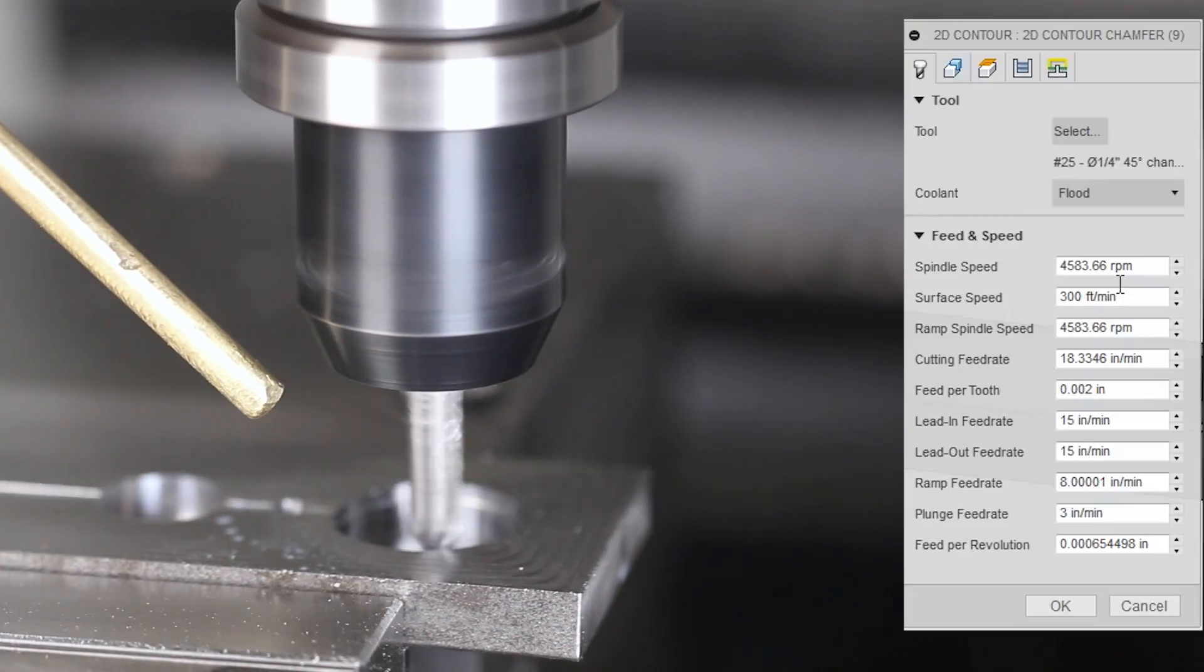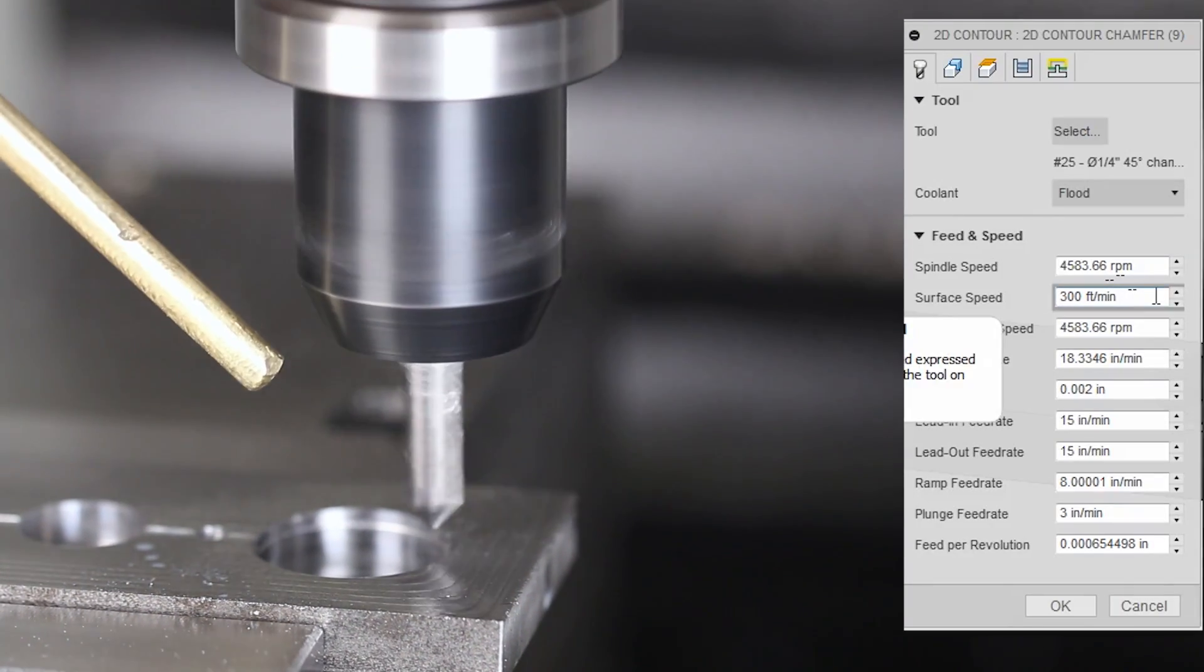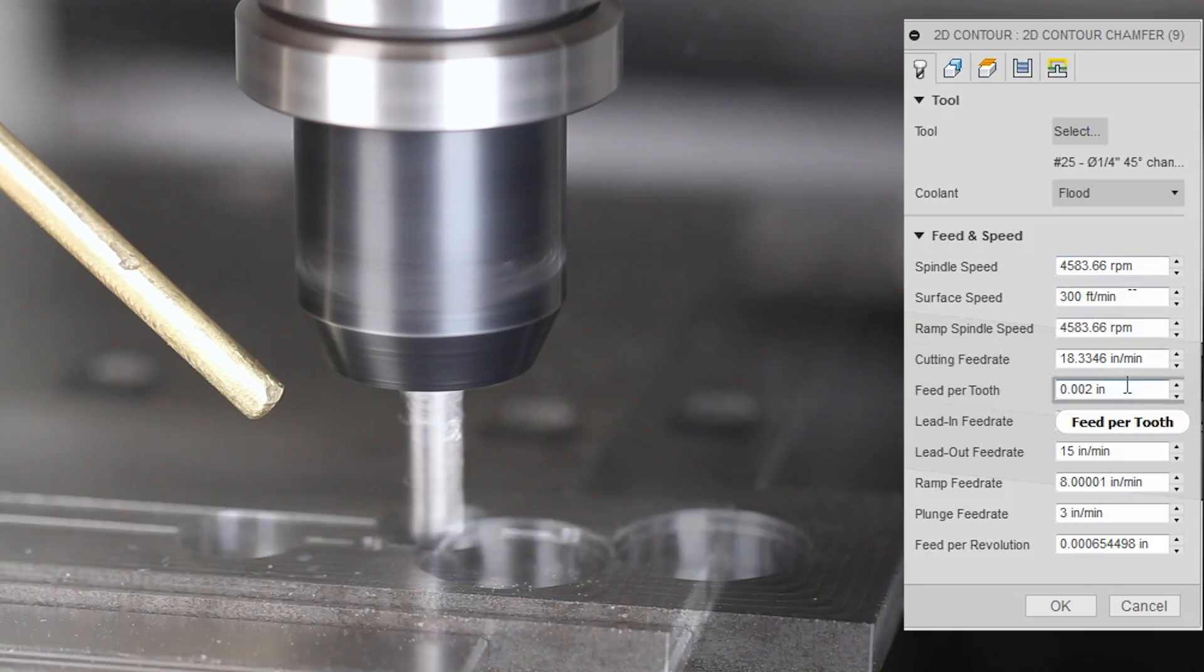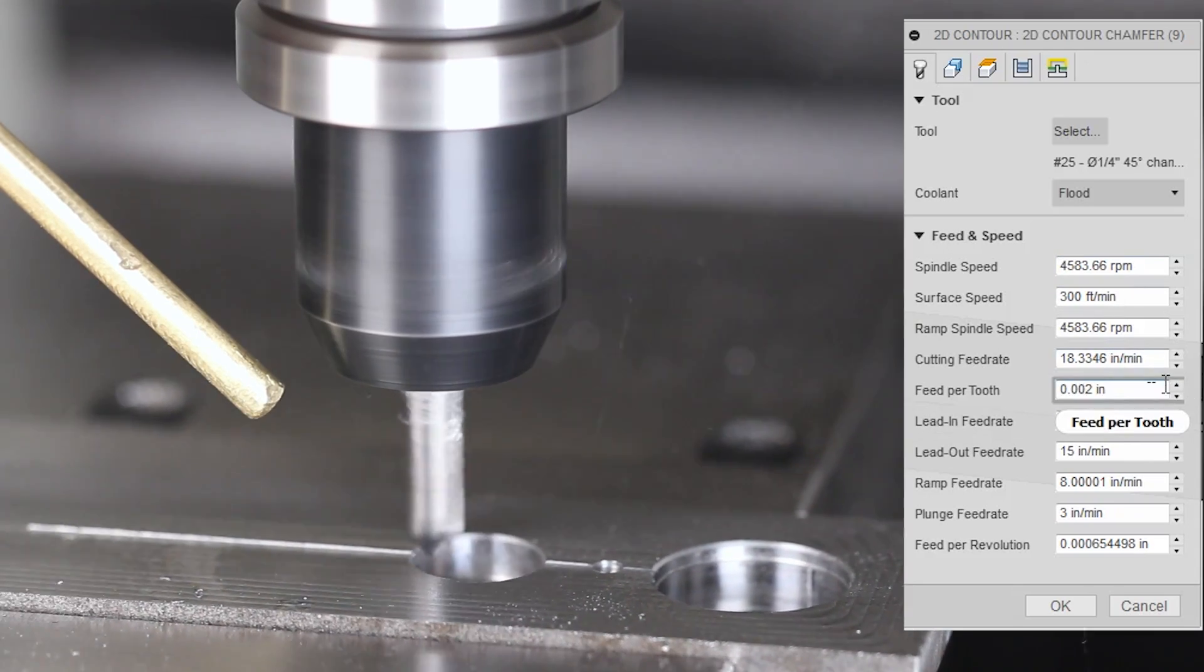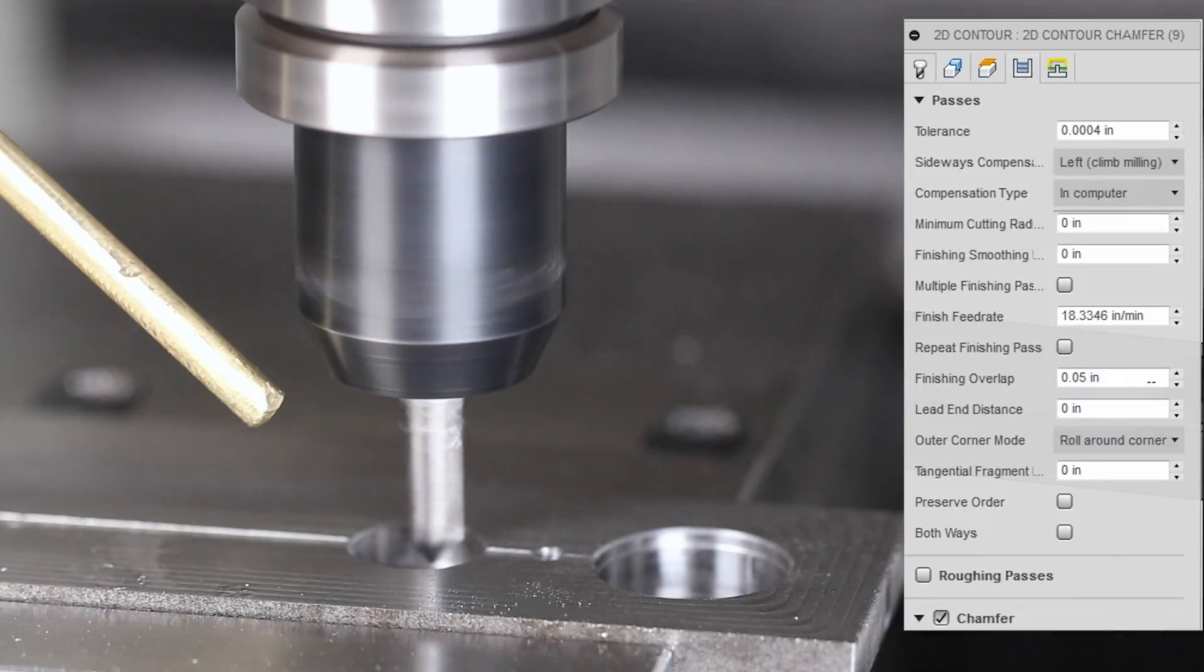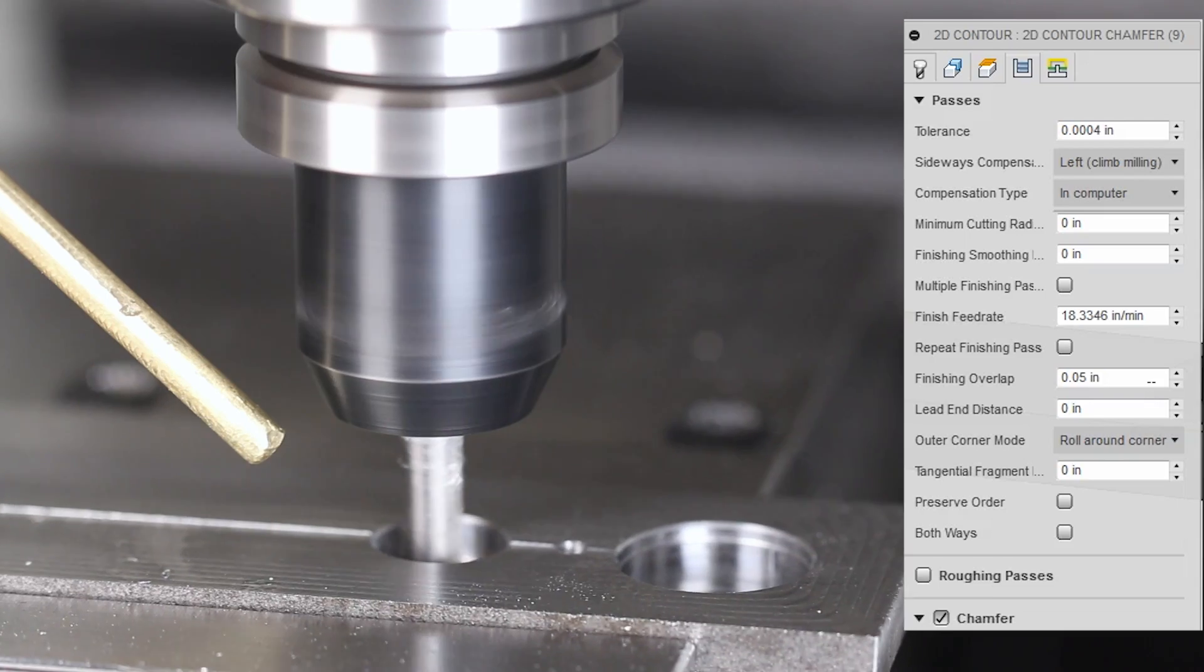Quick chamfer. 300 surface feet a minute, 4,500 RPMs, 2 thou per tooth, or about 18 inches a minute. Only about 2 thou. Really just trying to lightly break that edge.